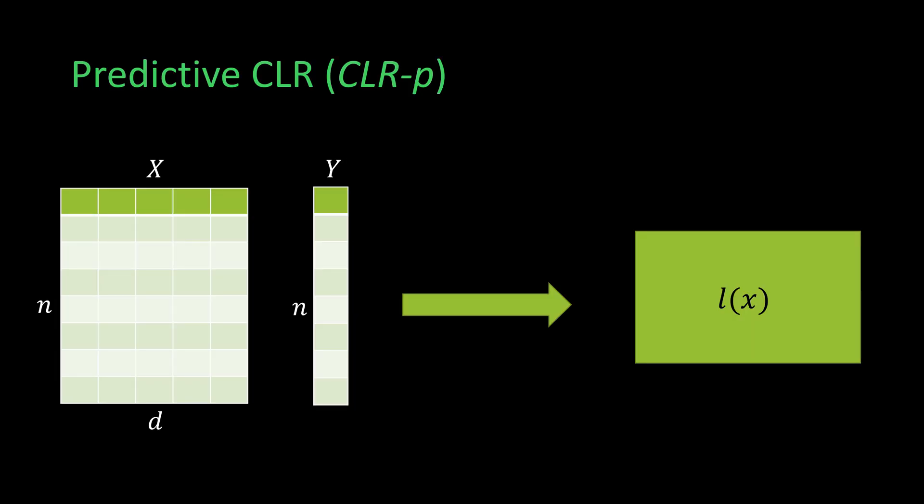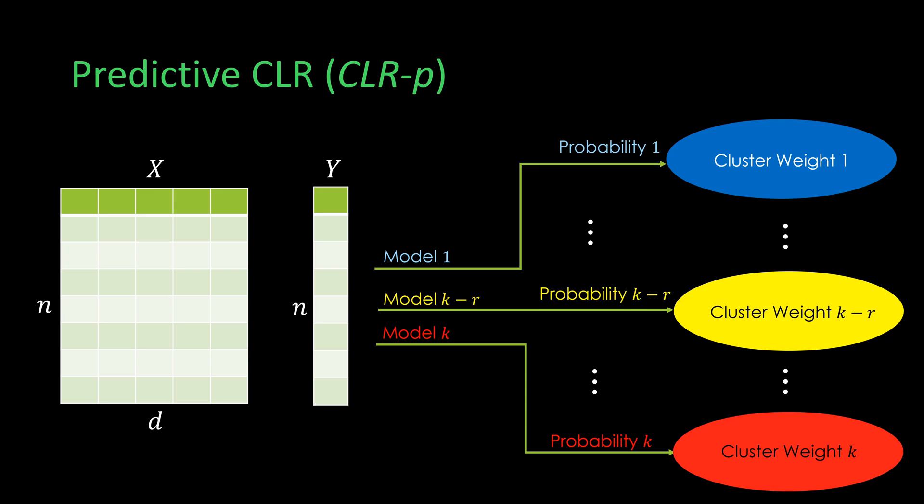The first proposed approach is predictive CLR, or CLRP. This approach learns a label prediction model LX from the data. For example, this model can be any classification model, such as random forest or logistic regression. The same approach can be extended by learning multiple models. The models then yield the probabilities of each cluster. After that, the prediction is obtained by averaging the results from all cluster models.